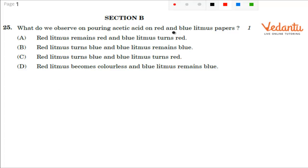What do we observe on pouring acetic acid on red and blue litmus paper? Very simple question. Red litmus paper—there will be no color change because it is an acid. And blue litmus paper will change to red. So the option is: red litmus remains red and blue litmus turns red. The option is A.